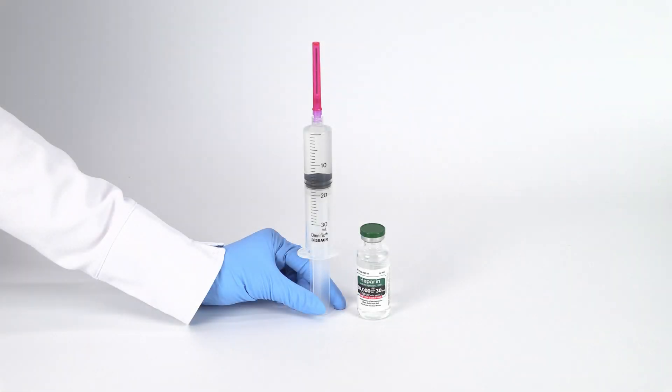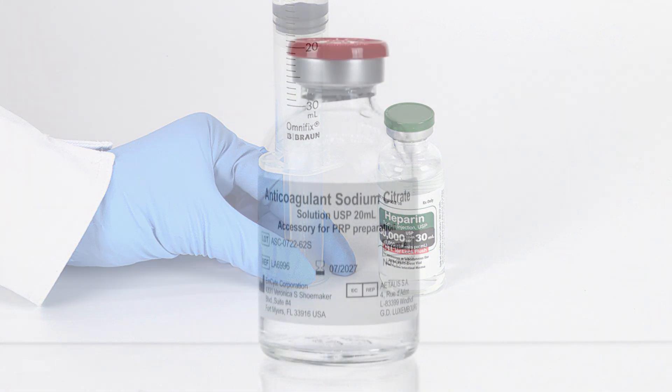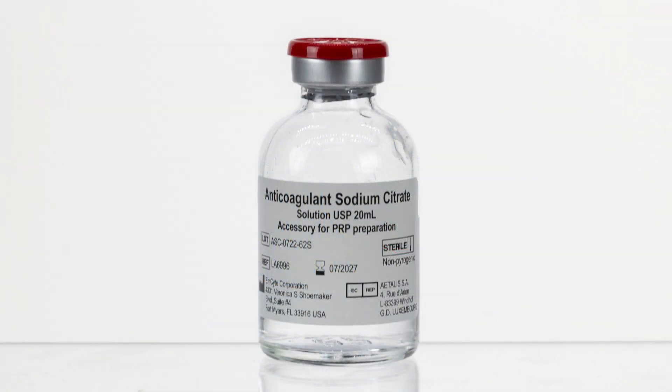First, we will begin with priming the bone marrow needle and filter. Use heparin solution 1000 units per milliliter as the anticoagulant of choice. You may also use citrate anticoagulant if heparin is not available.